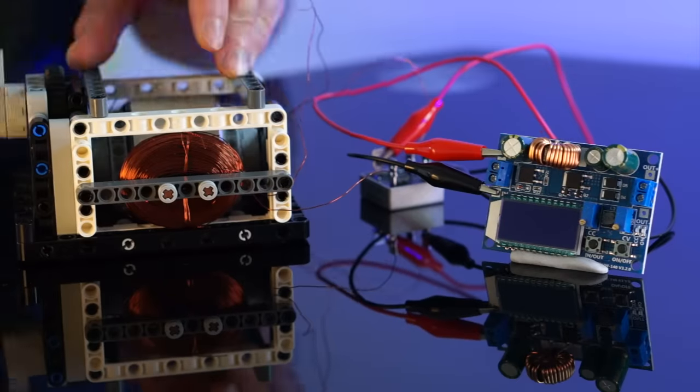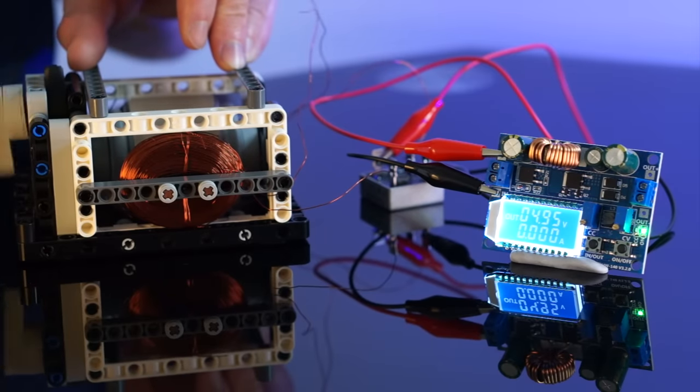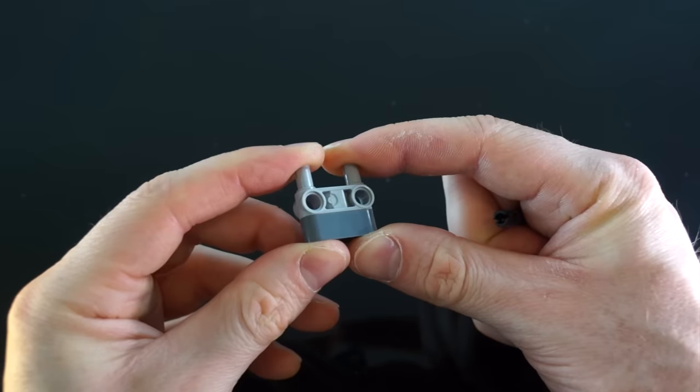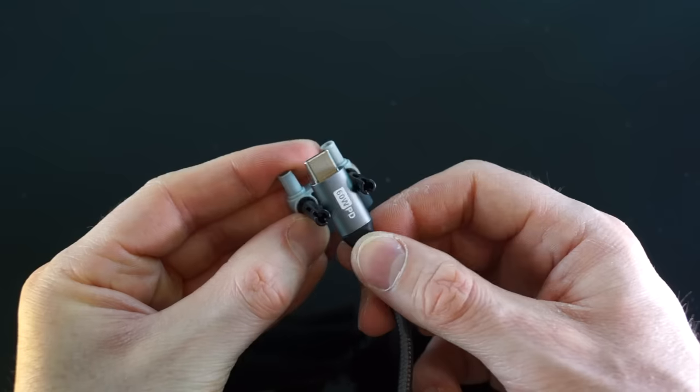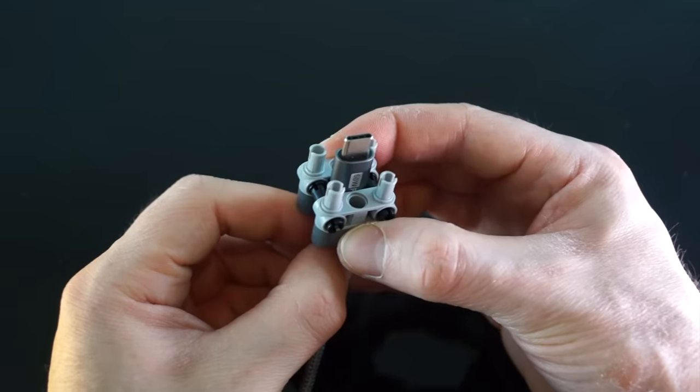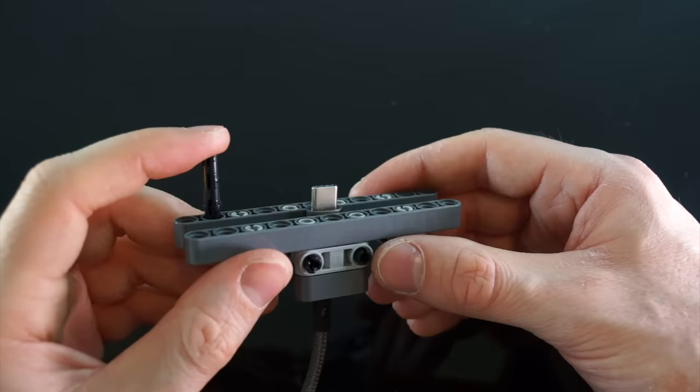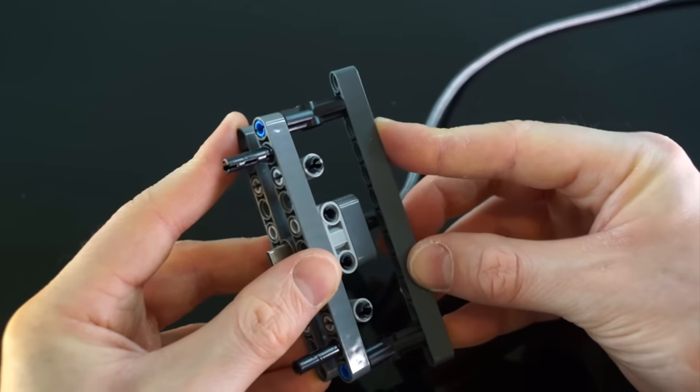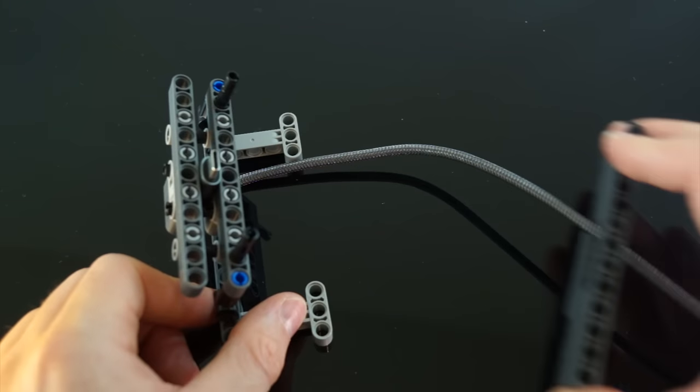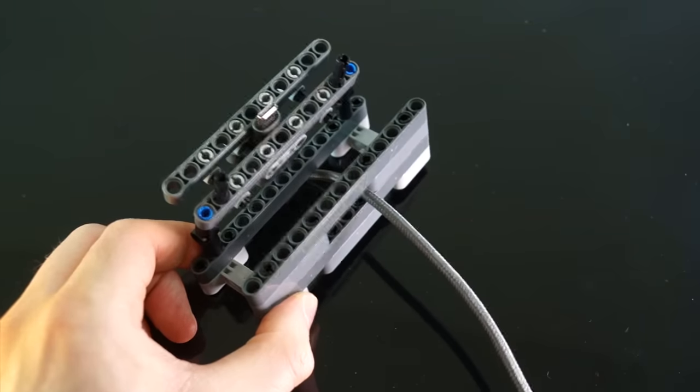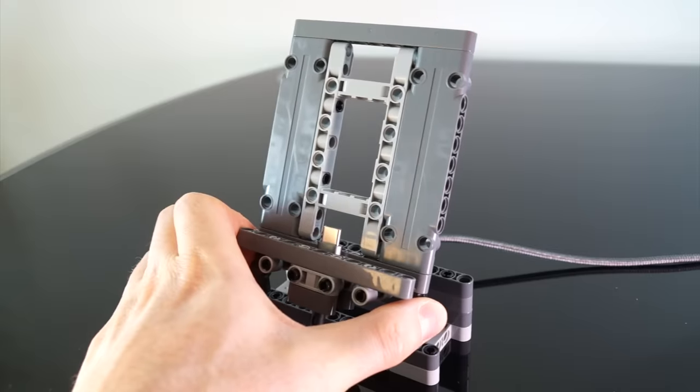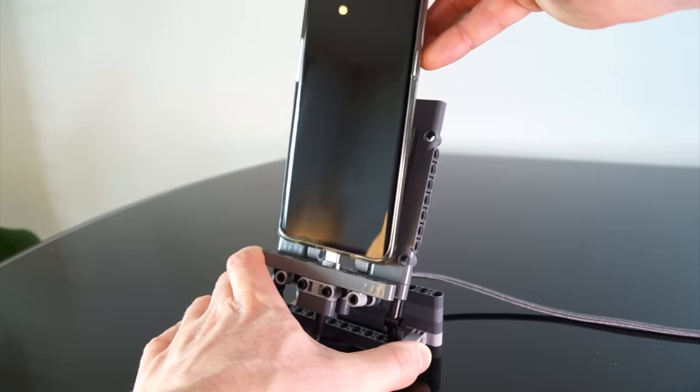After some twiddling here we go, 4.95 volts, close enough. Now because I'm bougie I want a USB cradle for my phone. So these pieces here will hold on to the cable. And these bendy pieces here will give us a nice lean to the stand. After we pop on this plate we now have a stand we can slide the phone onto.